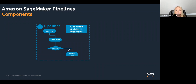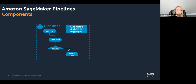There are callback steps as well, so you're not necessarily limited to SageMaker native steps inside Pipelines. With a callback step, you can integrate with tasks that are going to run on other AWS services or even other third-party applications.